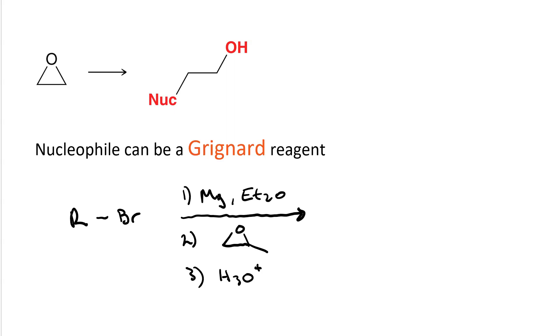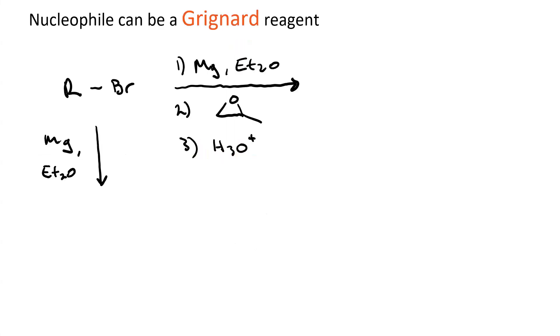What would we get? Let's go through it step by step. In the first step, we form the Grignard reagent, which has a resonance structure that's a carbanion with a magnesium bromide cation.